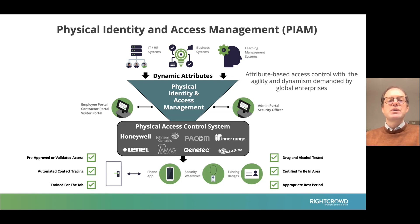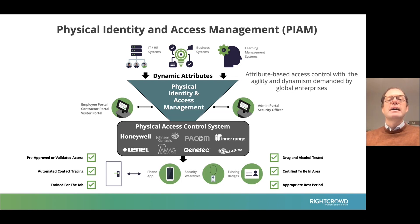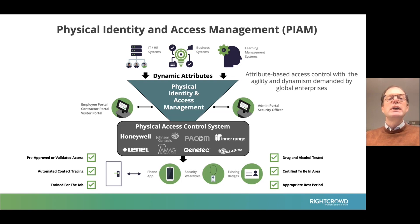You have to assign access rights to them. When a person wants to travel to another part of the country and have access to another location, a change request needs to be filed, someone needs to go into the system to add access rights, and then there's a risk of those access rights never being revoked. A Physical Identity Access Management system automates all of these processes.